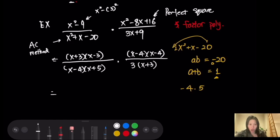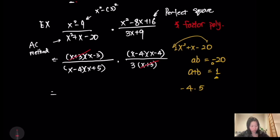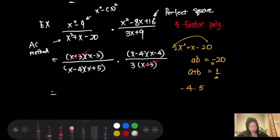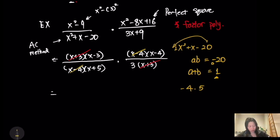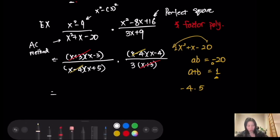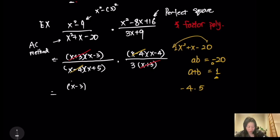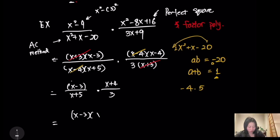Now we can divide out the common factor because they're multiplied — every parenthesis is a factor. x + 3 and x − 4 cross-cancel. What's left is (x − 3) over (x + 5) times (x + 4) over 3. After we reduce, we write it into one fraction times 3.